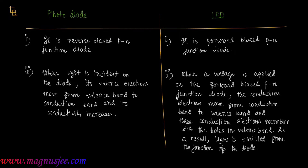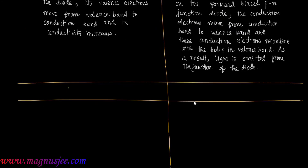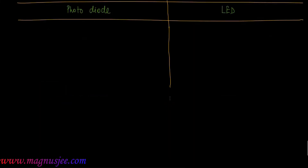So again, on the left we have photodiode and on the right we have LED. Now difference number three.